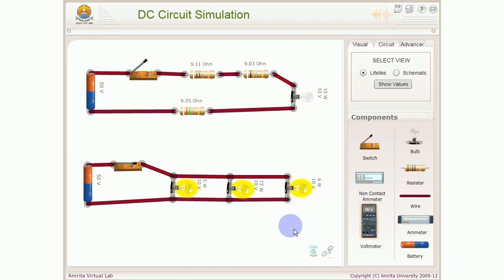Ab hum baat karte hai non-contact ammeter ki. You can see the value of current is 2.5 ampere and here you can see the value of current is 7.5 ampere. The value of current is getting changed, you can see here 3 ampere. So at every point you are getting different value of current. Har jagah aapko current ka different value mil raha hai. Iska matlab hai ki parallel circuit ke andar current ka value different hota hai across each load and the value of voltage is same.